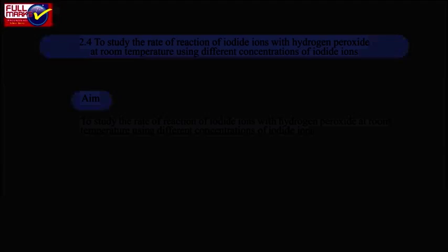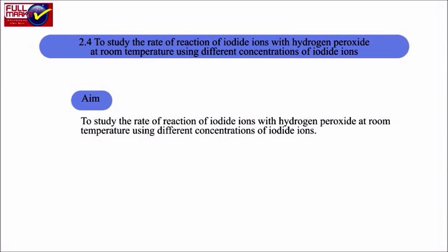Experiment 2.4: To study the rate of reaction of iodide ions with hydrogen peroxide at room temperature using different concentrations of iodide ions.